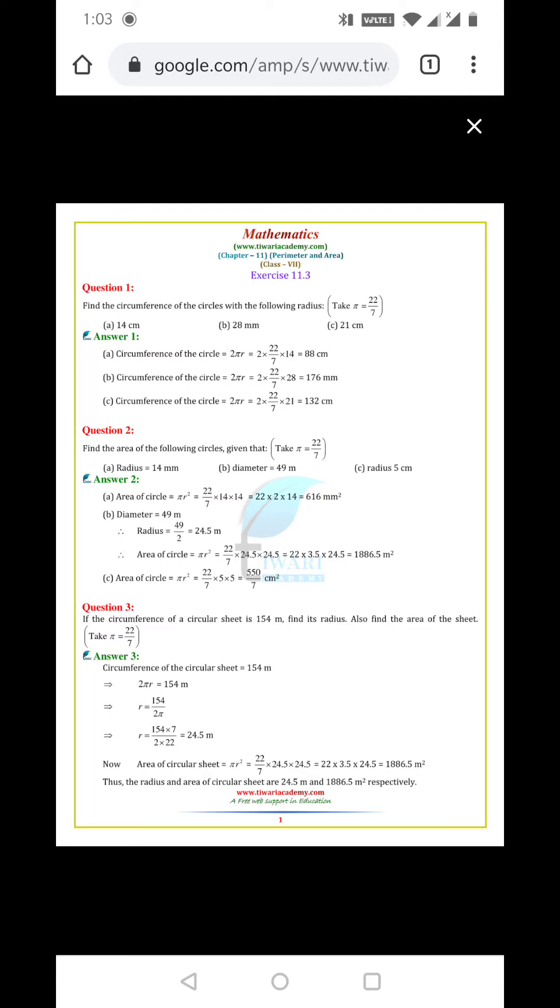Question number 2. Find the area of the following circles. Given that, take π equals 22 by 7.